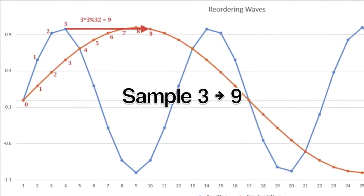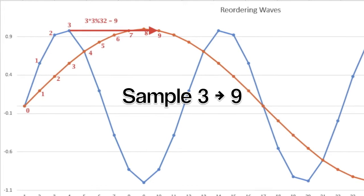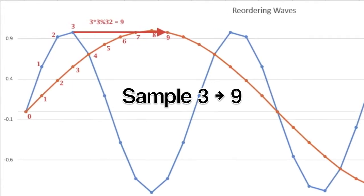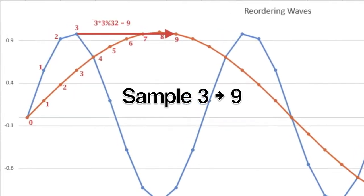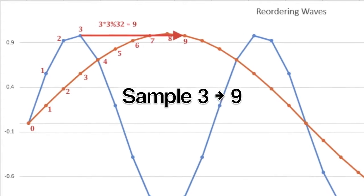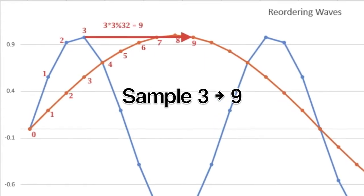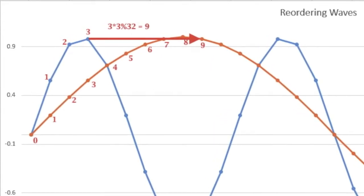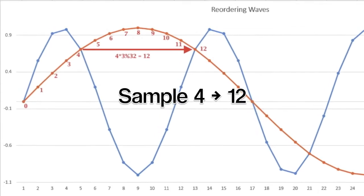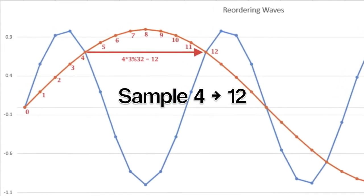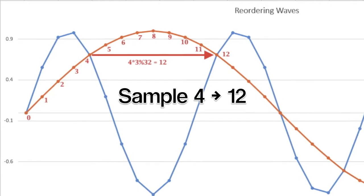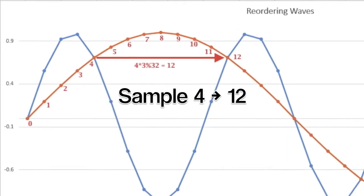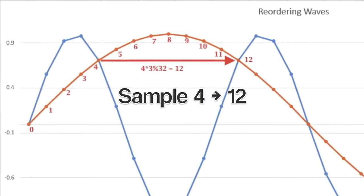Sample three of the three cycle wave now becomes sample nine of the one cycle wave. Notice that it could have gone to sample seven, which is the same value, but that's not where it belongs. Sample three belongs at sample number nine. Just like sample four, looks like it belongs at sample four, but that's not where it belongs. Four times three equals twelve. That's where sample four belongs.